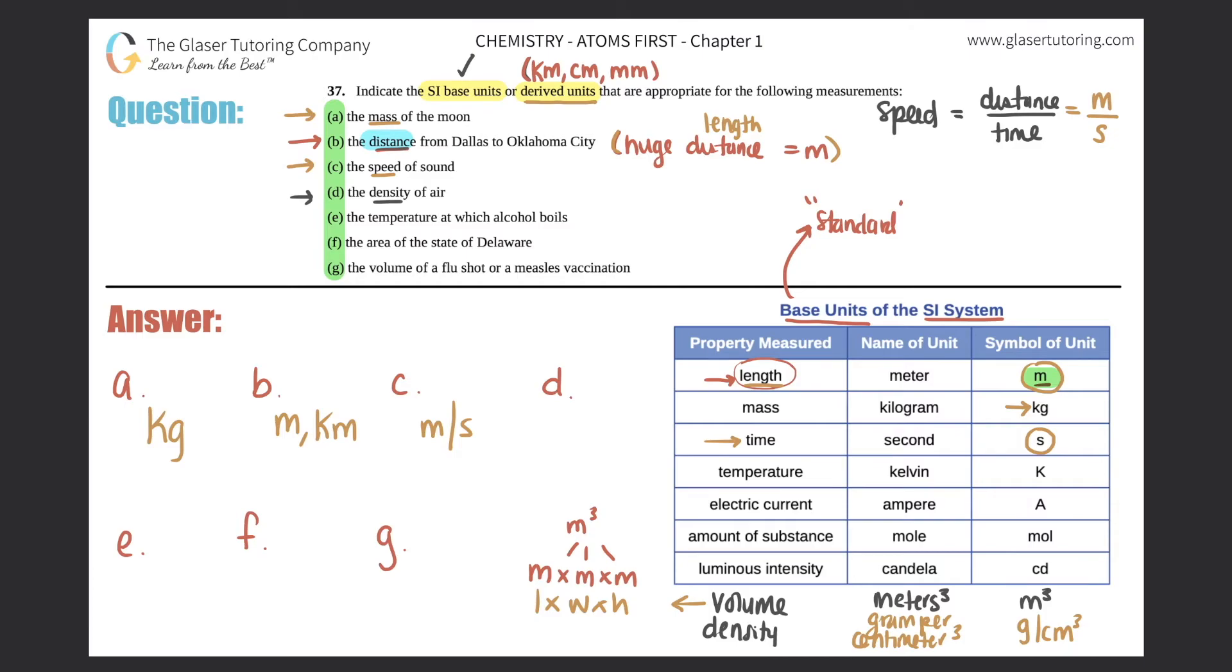For D, the density of air, density all the way down here, density is always going to be grams per centimeters cubed. So that would be the answer for D, grams per centimeters cubed.